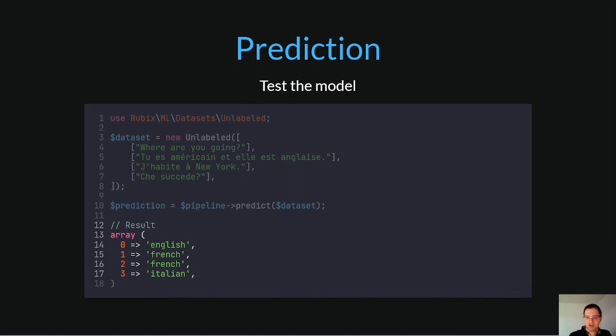In this case we get a list of language names for each sentence of the input array. The index of the array remains the same. So the first value of the array refers to the first sentence of our input dataset and so on.